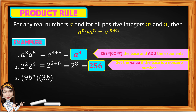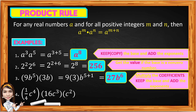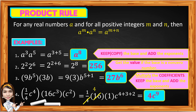Example 3: the quantity of 9b raised to the 5th times the quantity of 3b. Multiply the coefficients, keep the base, and add the exponents. So 9 times 3 is 27, copy base b, add exponent 5 plus 1 (the implied exponent), giving 27b to the 6th. Example 4: the quantity of 1/4 c to the 4th times 16c cubed times c squared. Multiply 1/4 times 16 times 1 — that is 4. Copy base c, add exponents 4 plus 3 plus 2 to get 4c to the 9th.